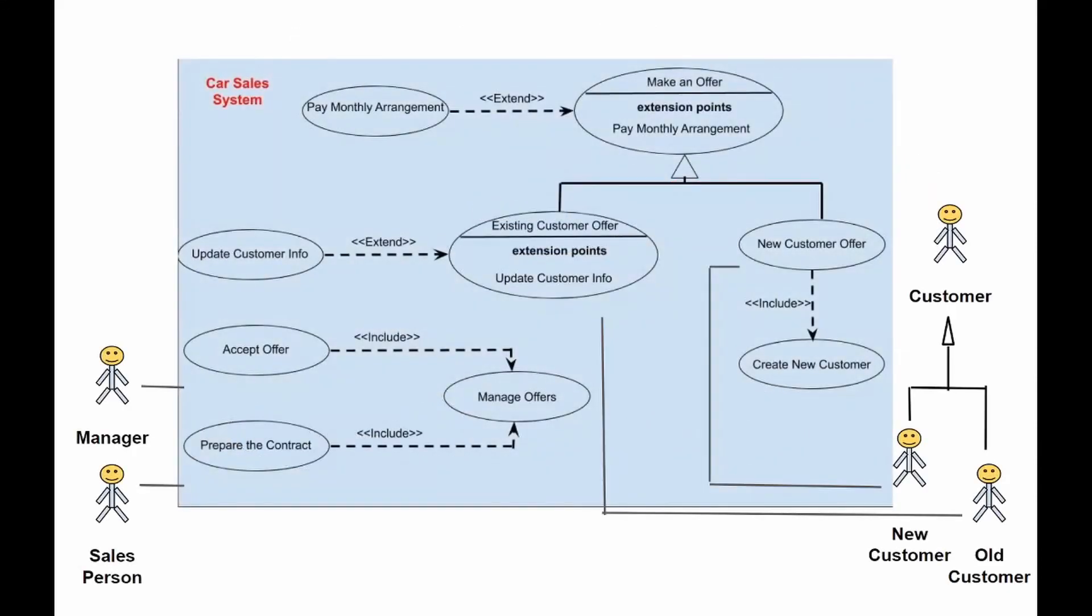This use case diagram depicts a car sale system and you can probably notice that even such a complicated system can be described with just 10 use cases. Here you can observe extensions, inclusions and associations that connect actors with use cases.